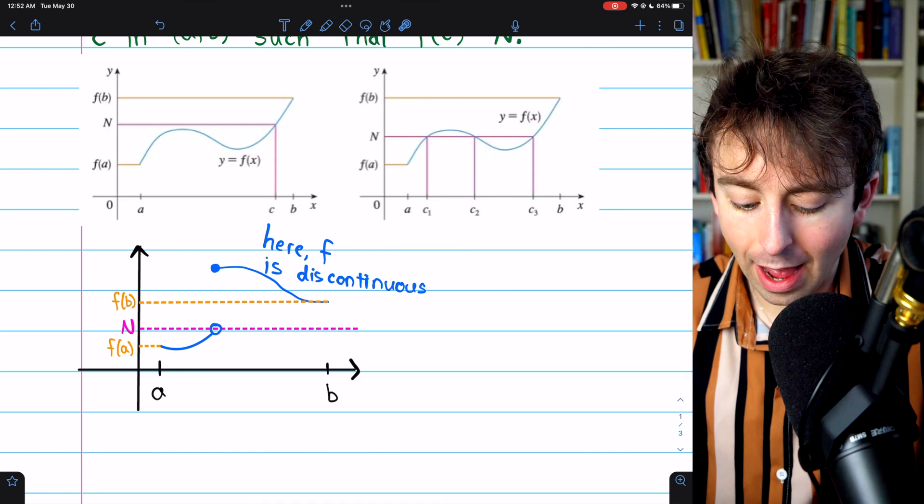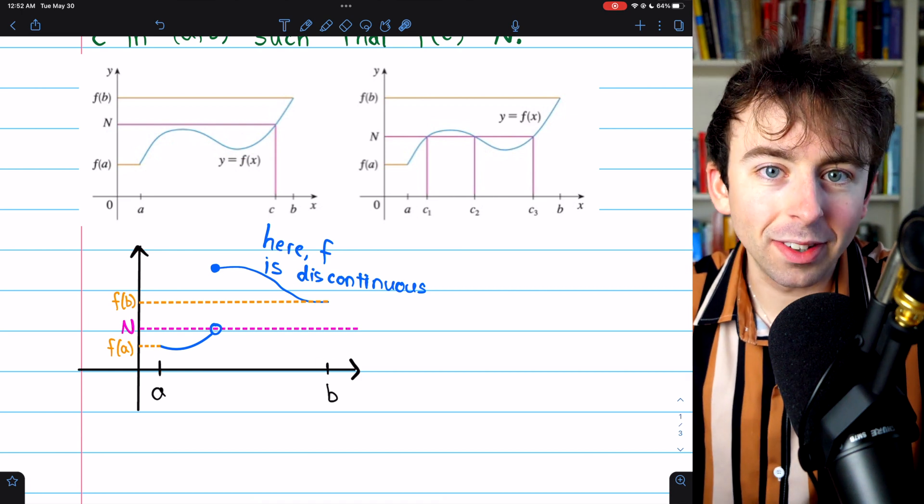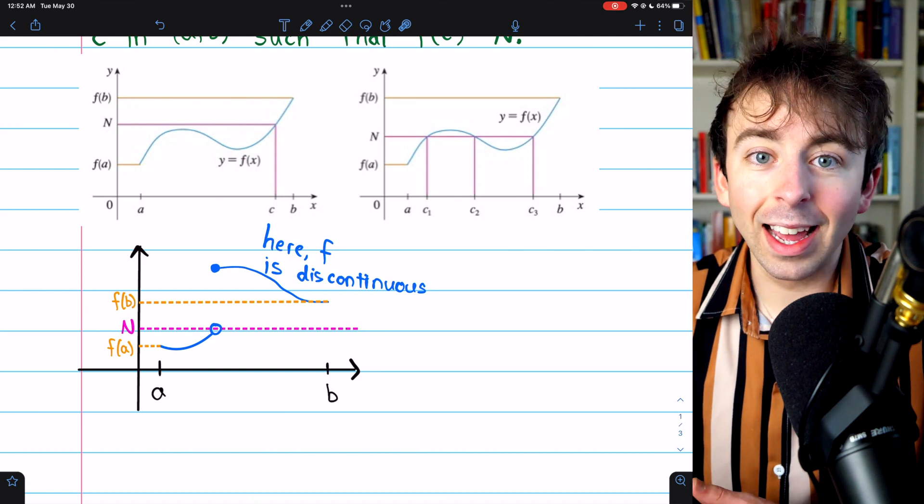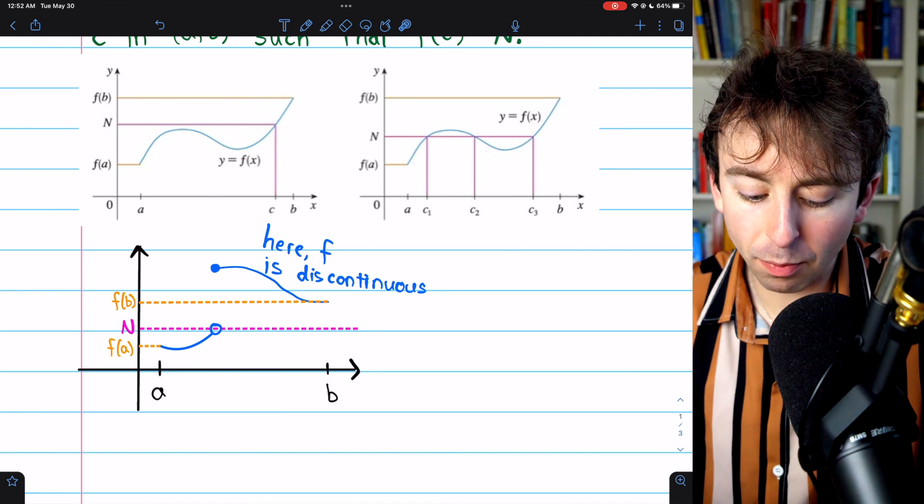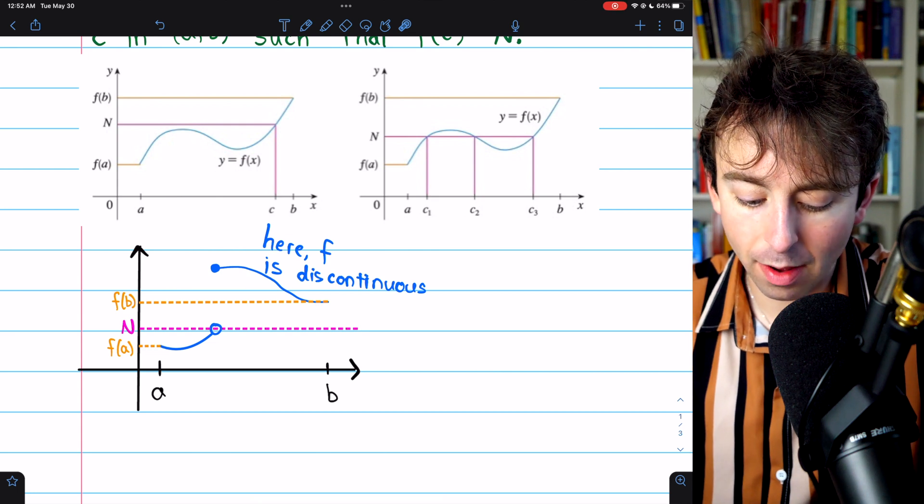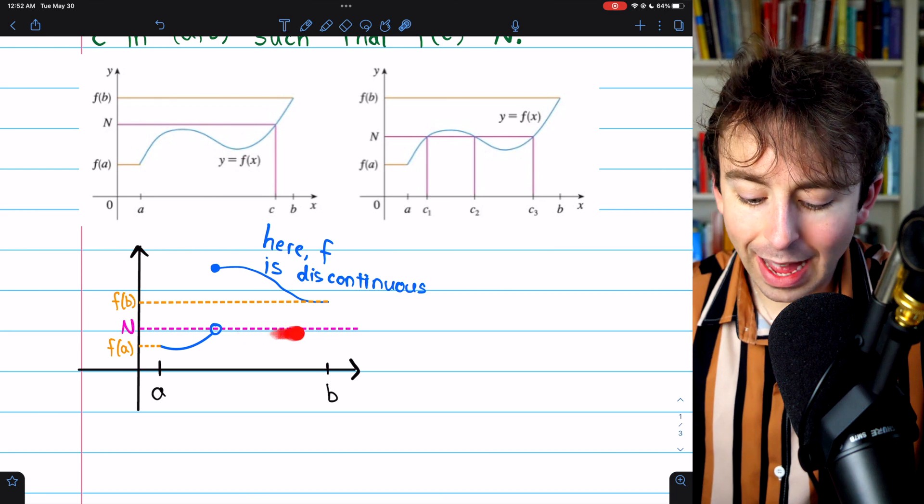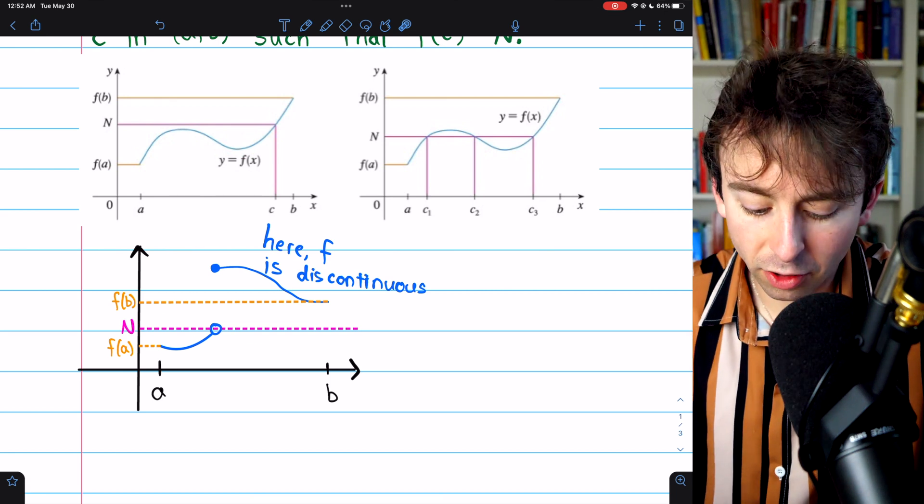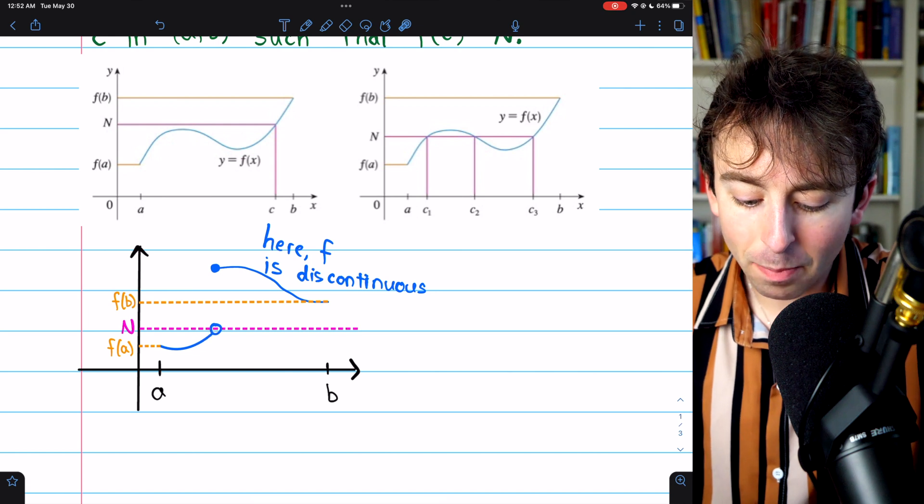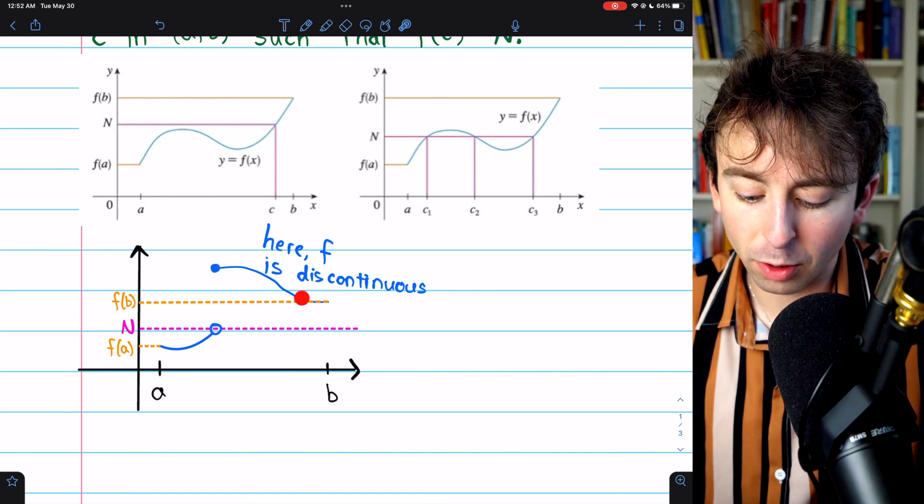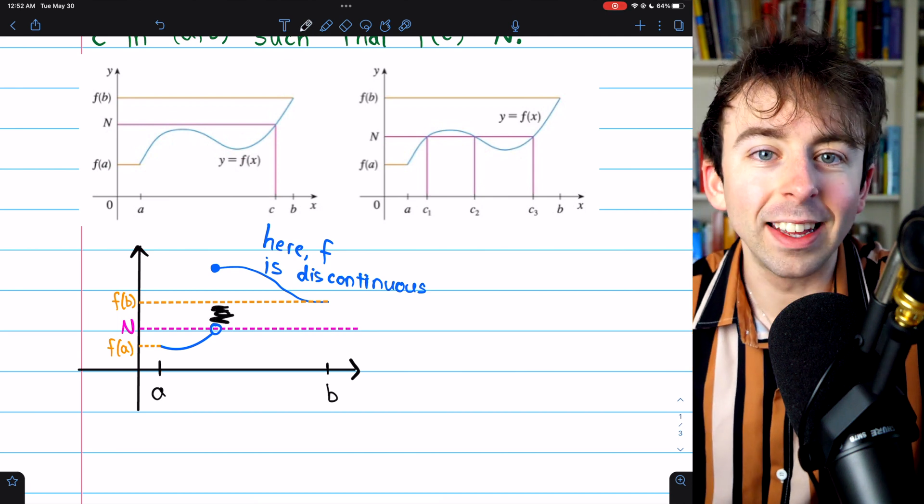Here, I've got a blue function f from a to b. However, it's not continuous, so the theorem doesn't apply. And we can see that this value N here, which is between the starting value f(a) and the ending value f(b), this value N is not taken on by the function at any point in the interval. It gets really close to N, but then it jumps up here, skips right over N. It also skips over all these other values in here.